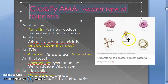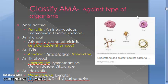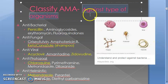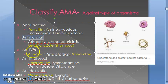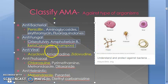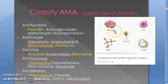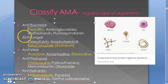Now, how can you classify antimicrobial agents? There are many ways. You can classify them based on the organism they act against — they may act against bacteria, fungi, viruses, protozoa, or helminths. Helminths include roundworms, flatworms, etc. So you can classify them as antibacterial — for example penicillin — or antifungal — for example ketoconazole.